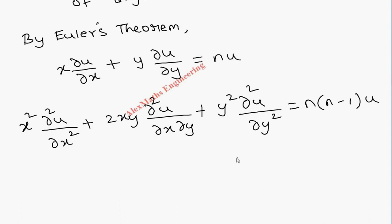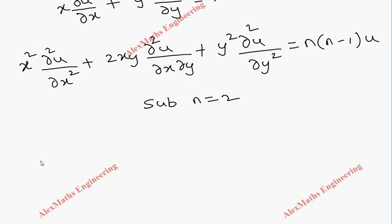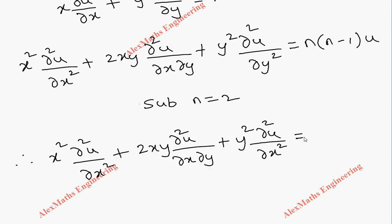Here we get x squared times partial squared u by partial x squared and the other two terms as is, equal to 2 times (2 minus 1) times u. Totally this is 2 times 1 times u, so it is 2u.